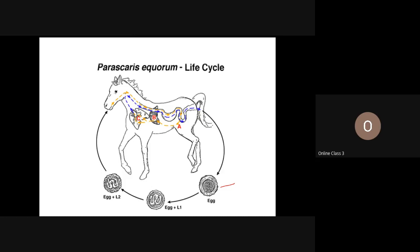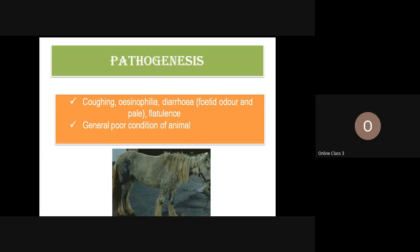From the alveoli, larvae are taken back through the bronchi and trachea to the intestine. When inside the alveoli, the parasite causes a pathogenic condition known as verminous pneumonia. Clinically, coughing due to pneumonic conditions is the most evident sign, along with eosinophilia — the eosinophil count will be high. There will also be diarrhea with a foul odor, and the horse will be in poor condition.